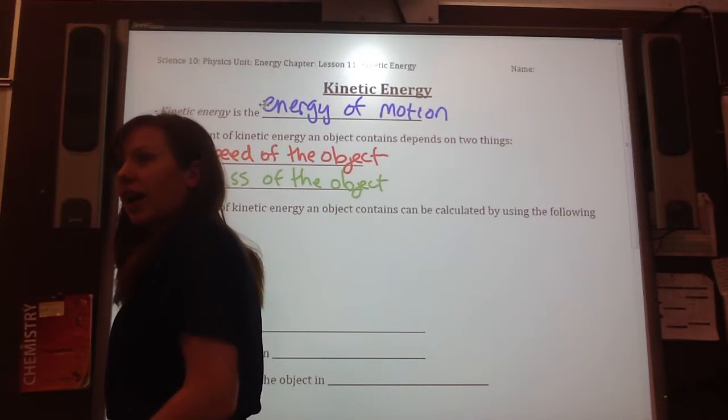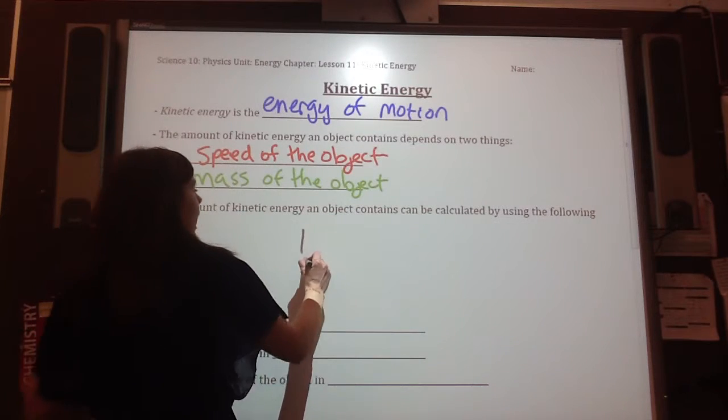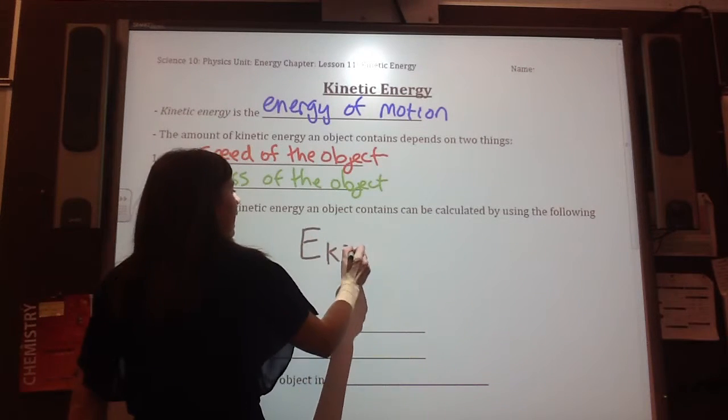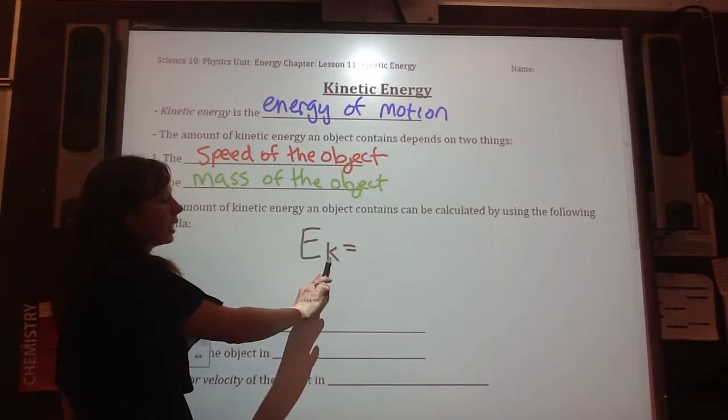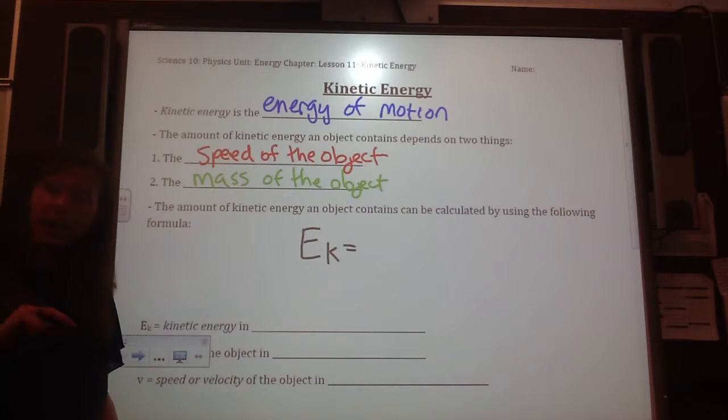We will do it. Okay, so how do you calculate it? Ek, ek stands for kinetic energy. So the k is like a subscript, meaning it's small. It's like a little tiny note beside it.